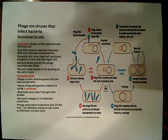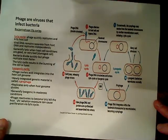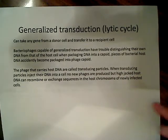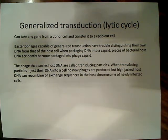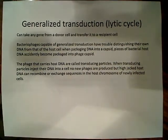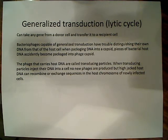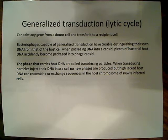Now we can talk about transduction and how it actually works. Generalized transduction involves the lytic cycle and can take any gene from a donor cell and transfer it to a recipient cell. Essentially, when these phage are assembling — synthesizing proteins and DNA — they mistake the bacterial cell's genetic material for their own. So they package some of the bacterial cell's genetic material into the capsid, and when the cell lyses, that packaged material gets injected into the next bacterial cell — that's how the gene transfer occurs.